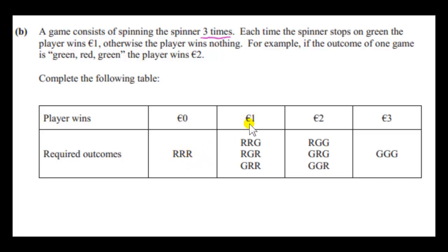Now, to win a euro, the pointer must point to green one time. So we need to consider those outcomes of three spins of the spinner that have just one G in them. So there's three ways that we can arrange the letters R, R, and G. We can put G at the end, we can put it in the middle, or we can put it at the start.